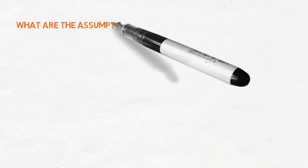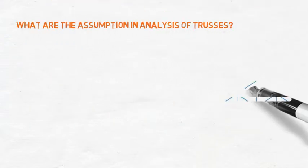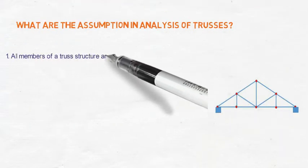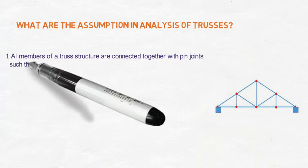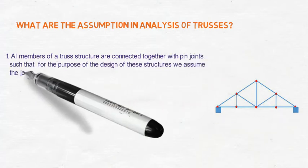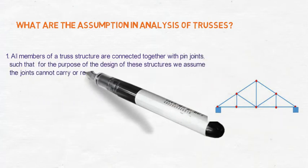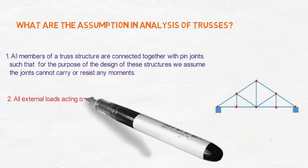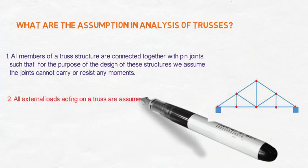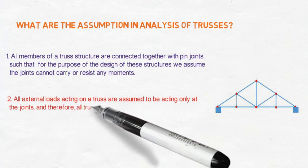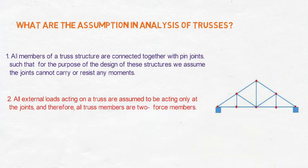What is the assumption in the analysis of trusses? First, all members of a truss structure are connected together with pin joints, such that for the purpose of the design of these structures, we assume the joints cannot carry or resist any moments. Second, all external loads acting on a truss are assumed to be acting only at the joints.